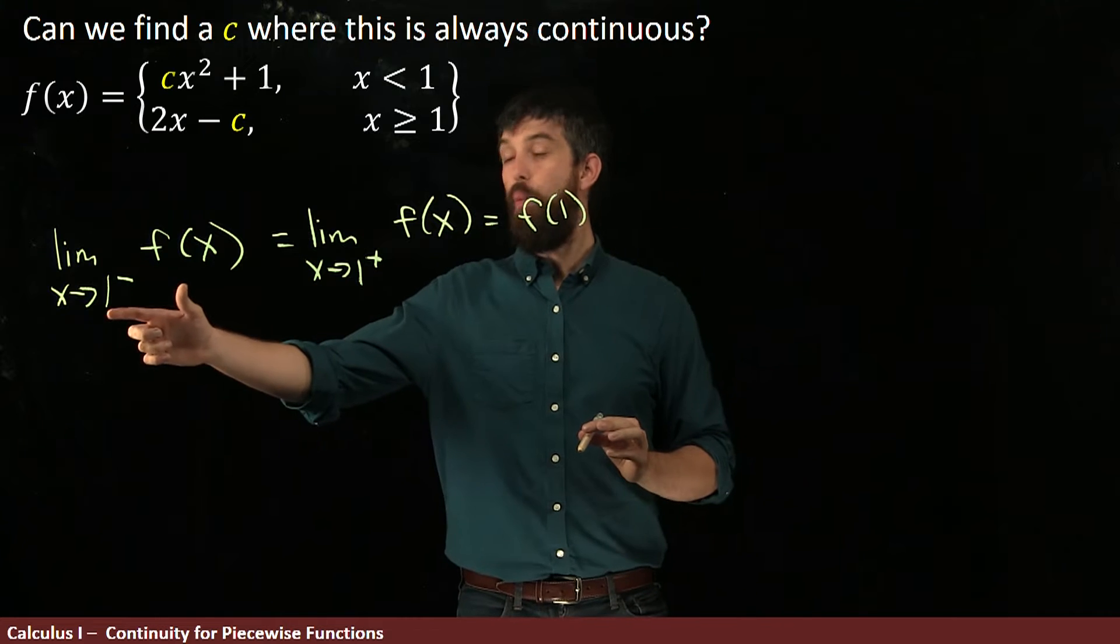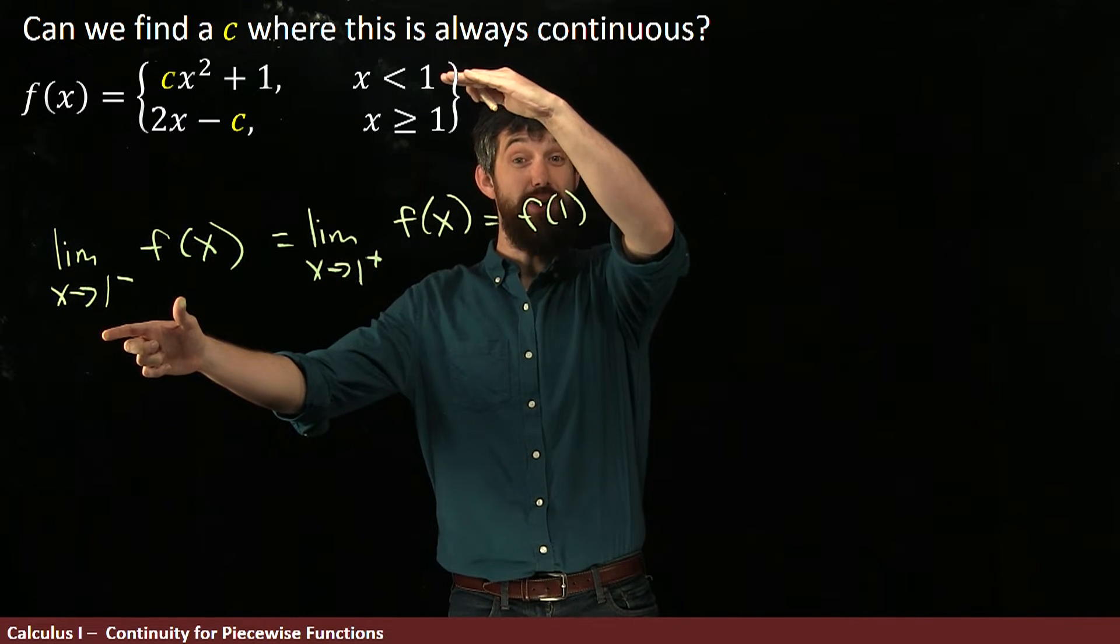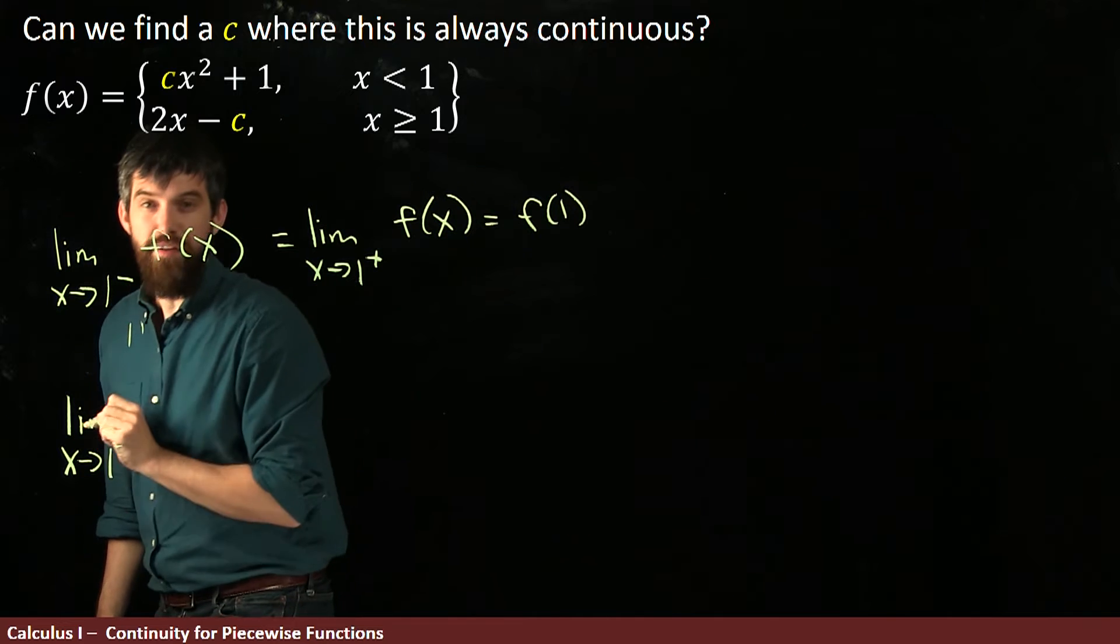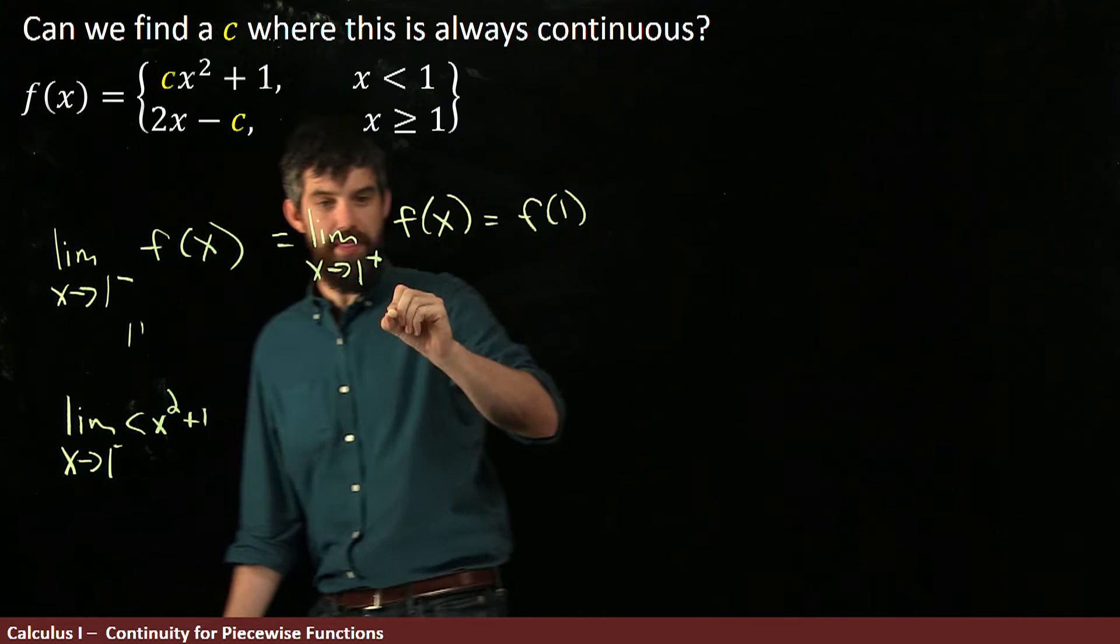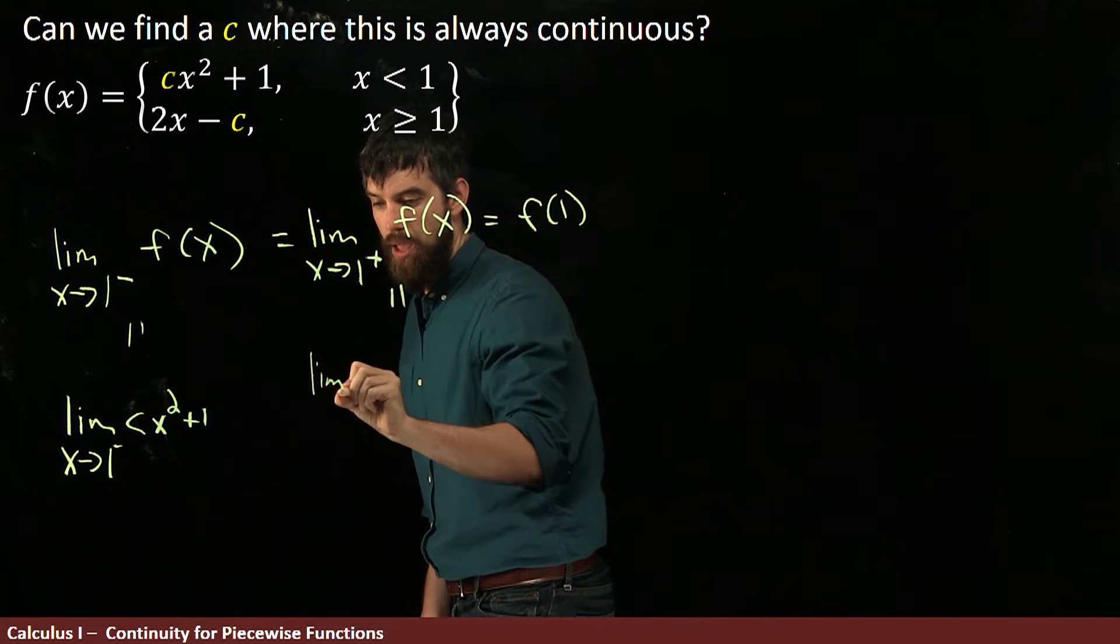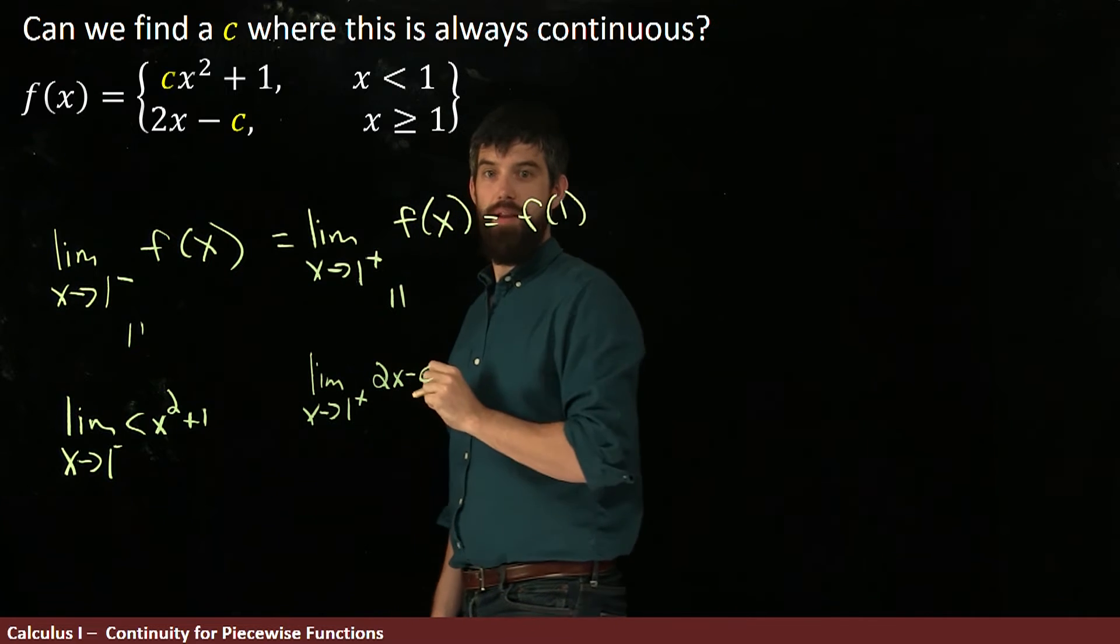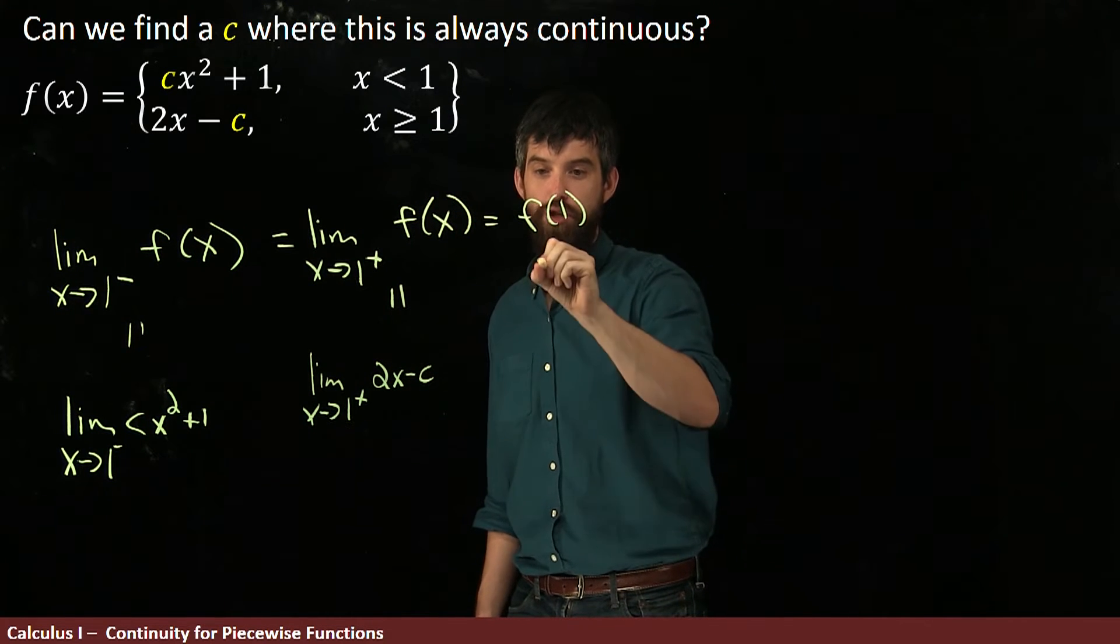Okay, well now let's do the 1 from the left. From the left is this top one up here, x values less than 1. So in other words, this is the same thing as the limit as x goes to 1 from the left of cx squared plus 1. And this one over here is just going to be equal to the limit as x goes to 1 now from the right of 2x minus c. And the f of 1 is just going to be plugged in here, this is going to be equal to 2 minus c.